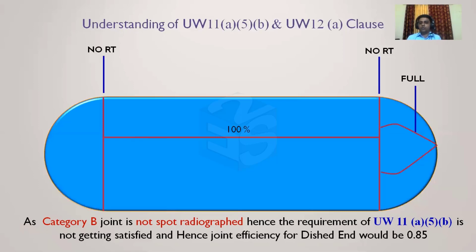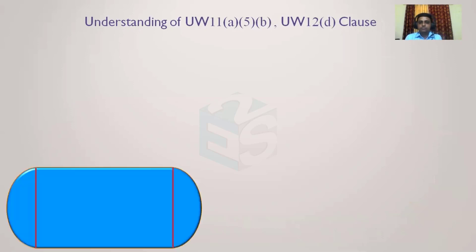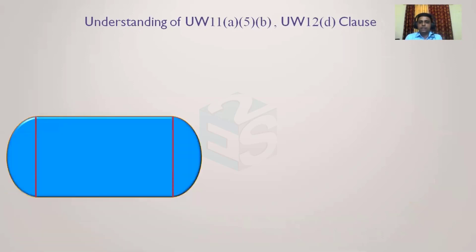For shell joint efficiency in this case it will be 0.85, and for the dish end also it will be 0.85, because the shell-to-head junction is not radiographed. If it had been at least spot radiographed, we would have taken joint efficiency of 1 for the dish end on the right-hand side.